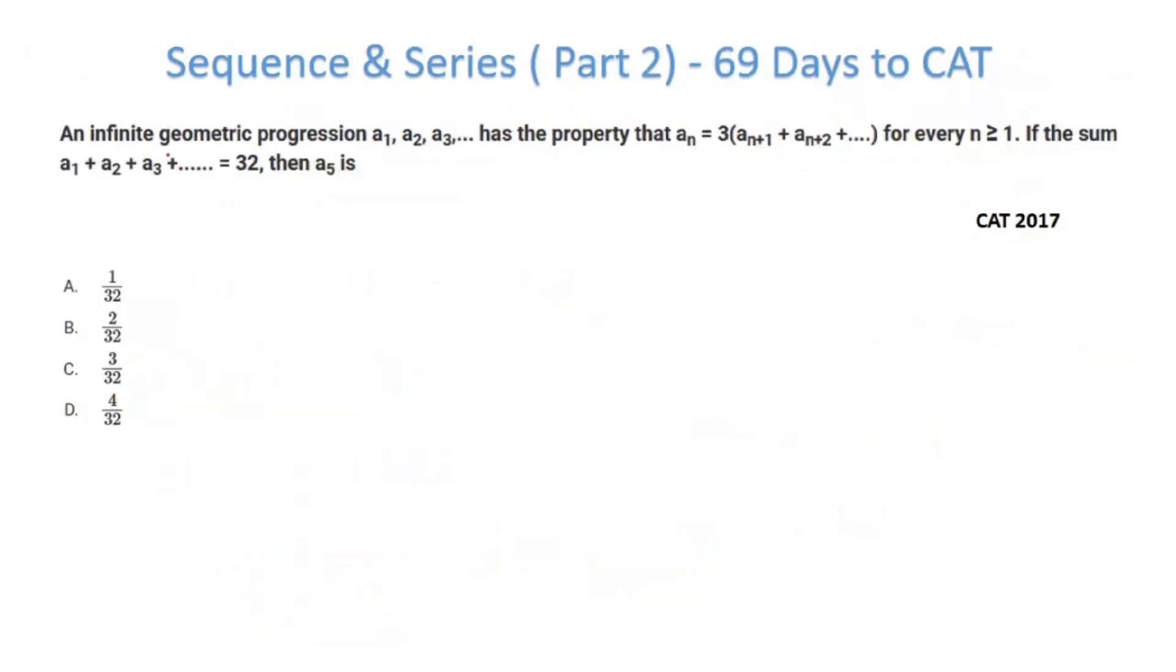Moving forward, I have an infinite GP with the property aₙ = 3(aₙ₊₁ + aₙ₊₂ + ...) for n ≥ 1. The sum is given as 32. Then a₅ is what? Have a look at this very clearly. I can write a₁ = 3(a₂ + a₃ + ...). So what can I write here? I can write a₂ + a₃ + ... = 32 - a₁.